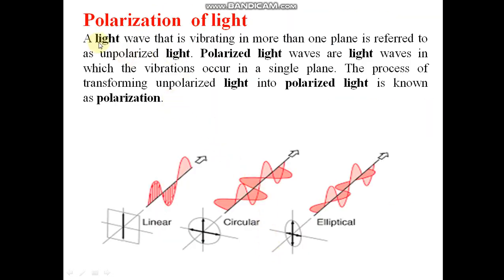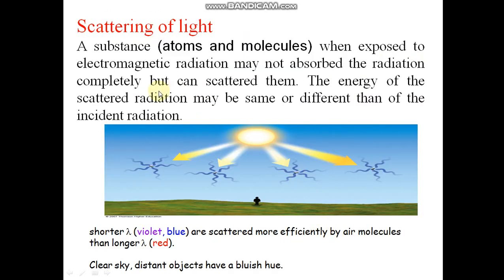Polarization of light. A light wave that is vibrating in more than one plane is referred to as unpolarized light. Polarized light waves are light waves in which the vibration occurs in a single plane. The process of transforming unpolarized light into polarized light is known as polarization. This is linear polarization, circular.